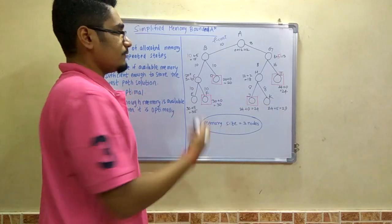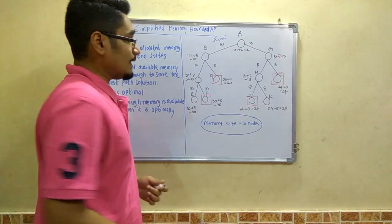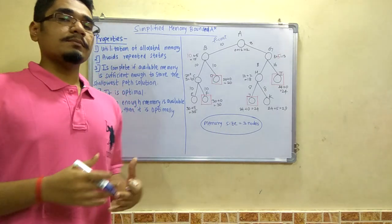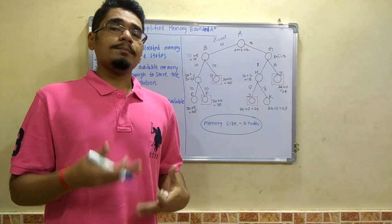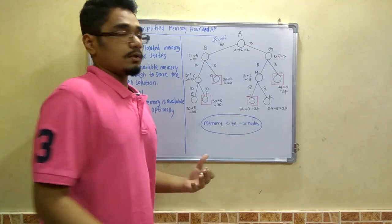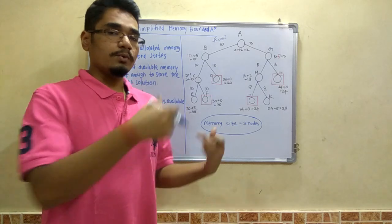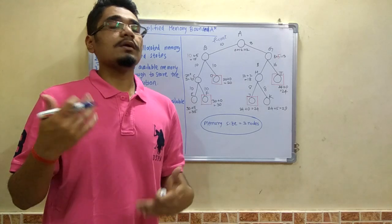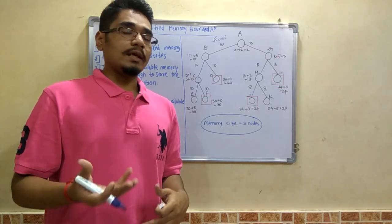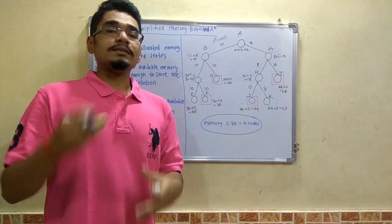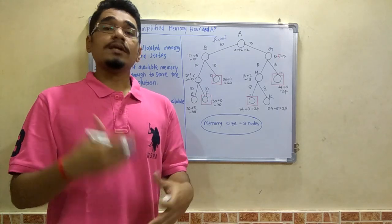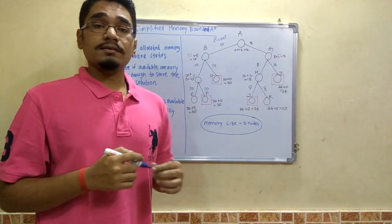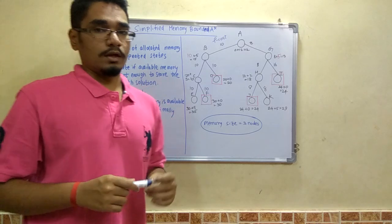This tree is given along with a specified memory size — in SMA* the memory size is developer-defined. In this problem, it can store only 3 nodes. If one more node is incorporated beyond that limit, we must drop a node to maintain the constraint and not violate this rule.